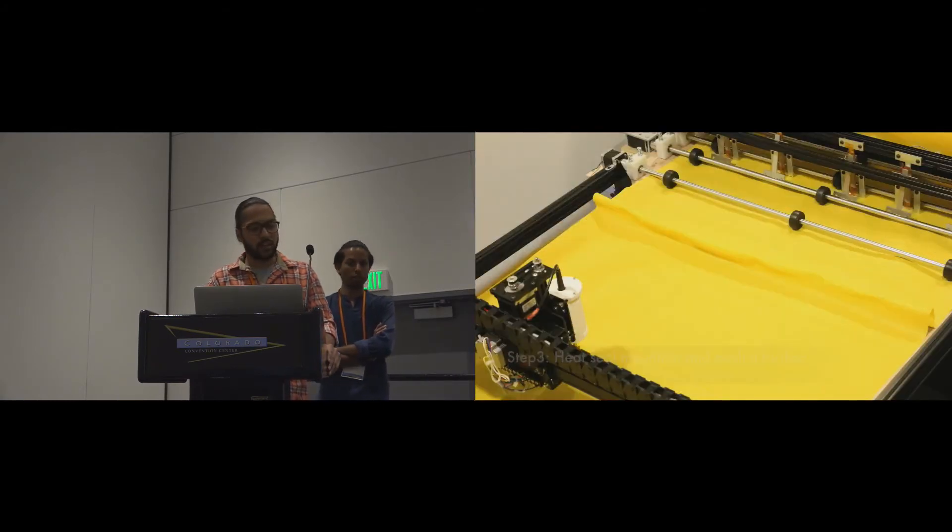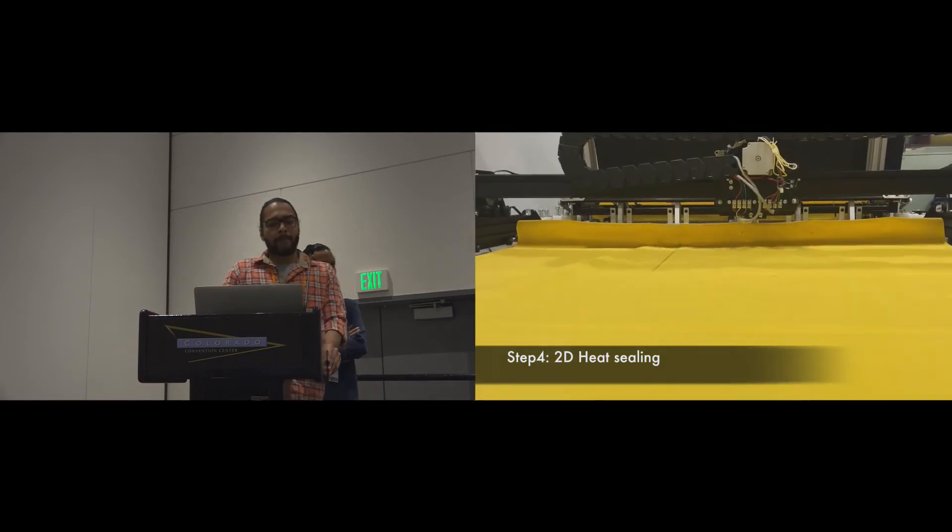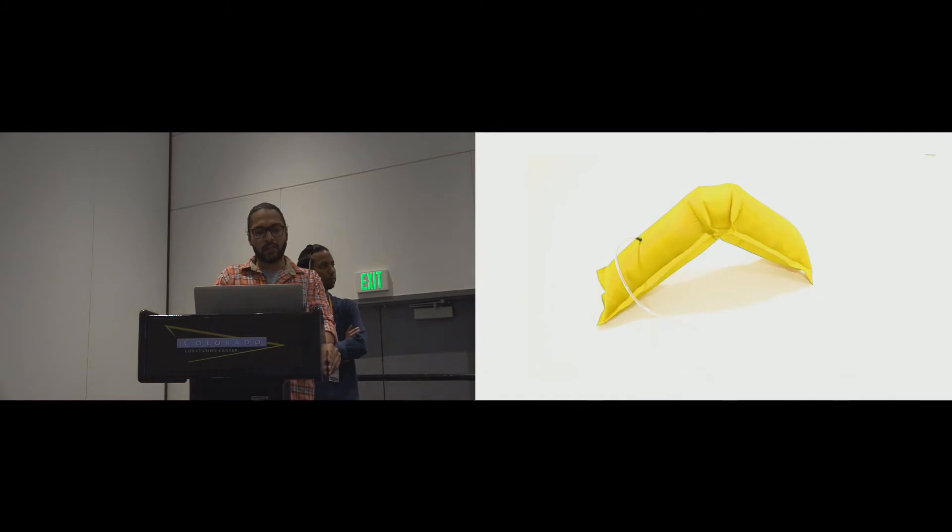And in the 2D sealing area, a heated iron on XY gantry goes over the mountain to complete the sealing process. And this is what we get out of the machine. The result is a simple object with an embedded actuator.